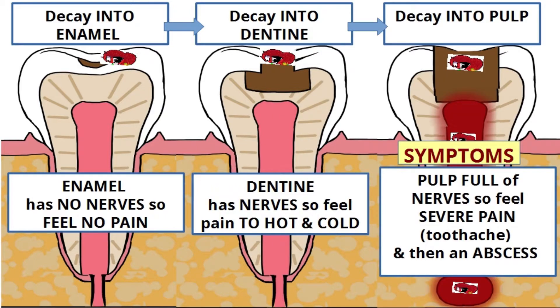The pulp is full of nerves. So with tooth decay into the pulp, you feel severe pain and toothache, and this progresses to a dental abscess at the end of the root.